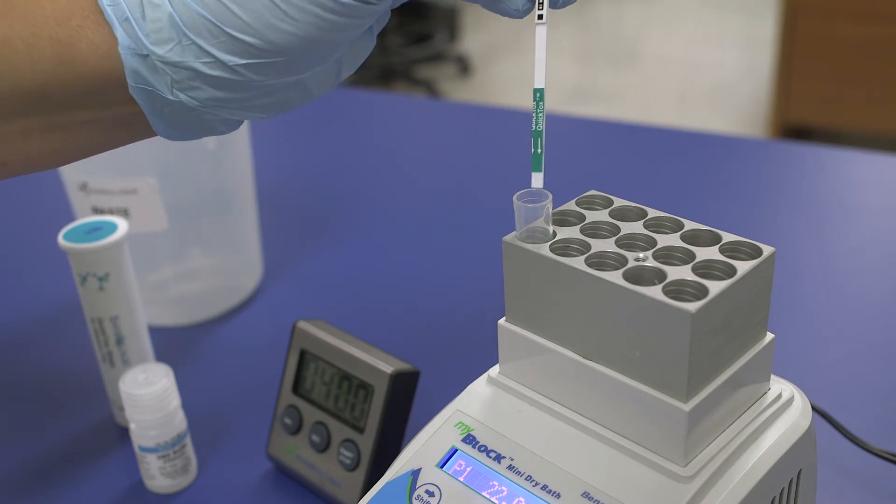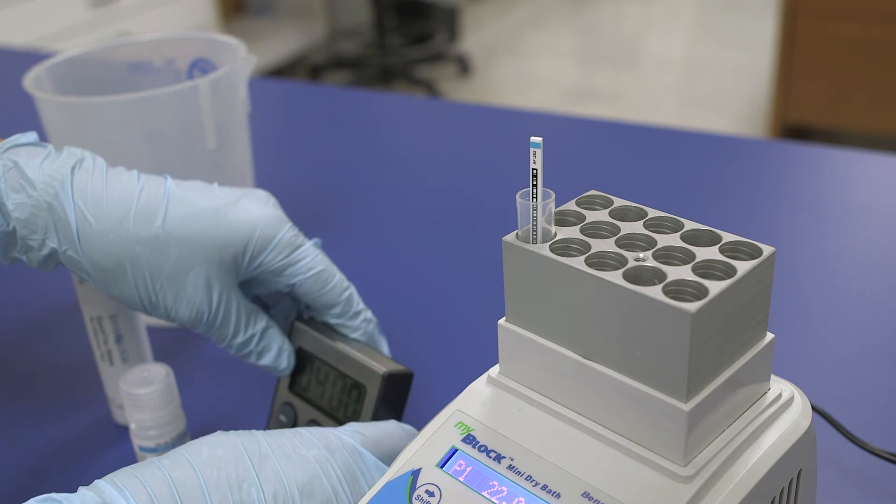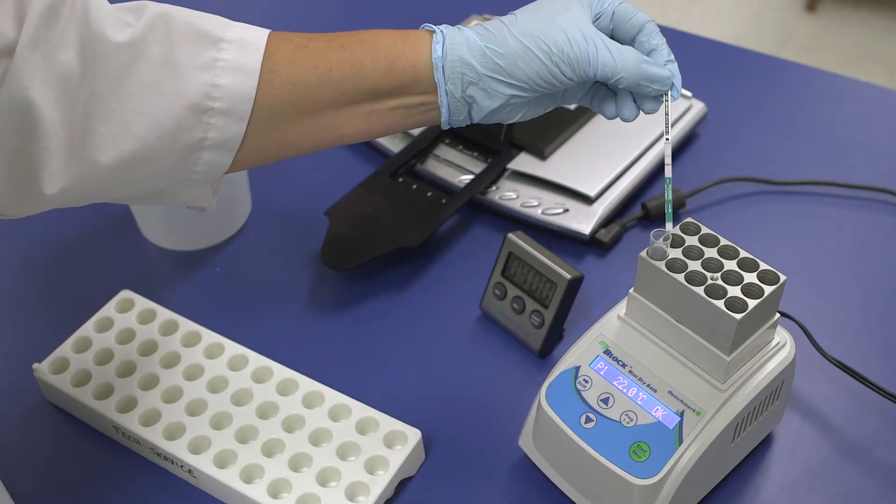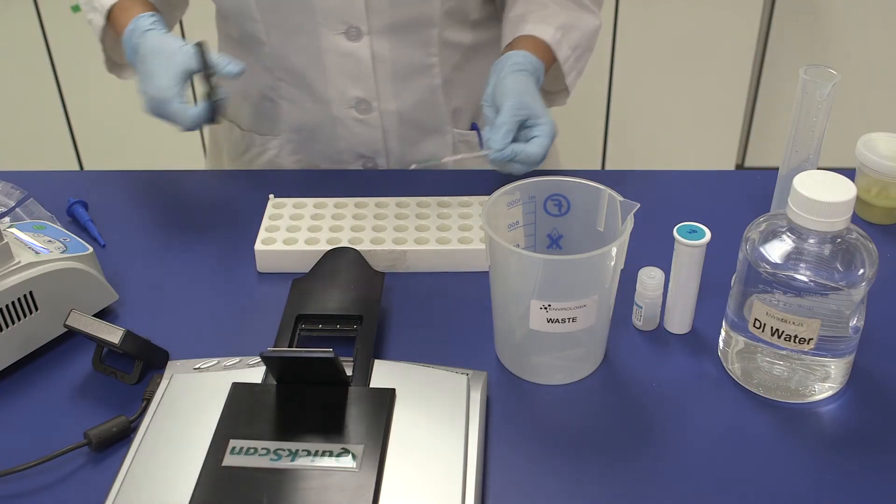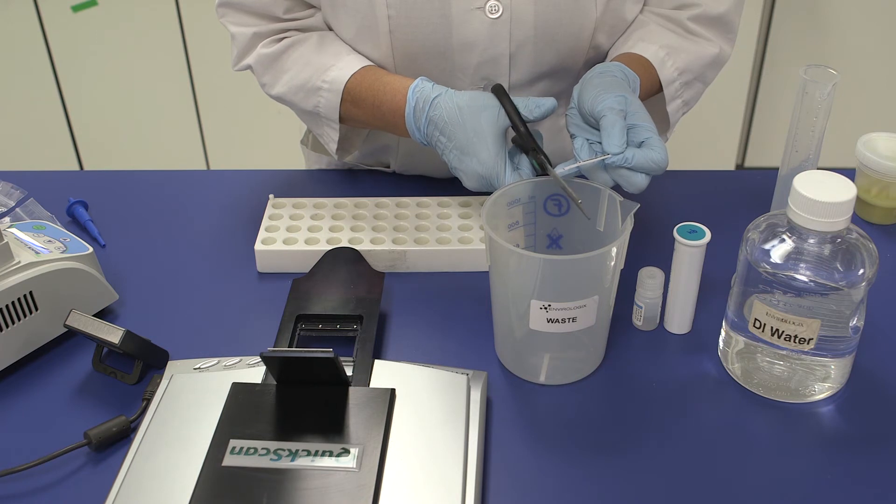Step 4. Add a new test strip and allow to react for 4 minutes. Step 5. At exactly 4 minutes, remove the test strip from the tube. Cut off the tail pad and immediately place the strip in the quick scan reader.